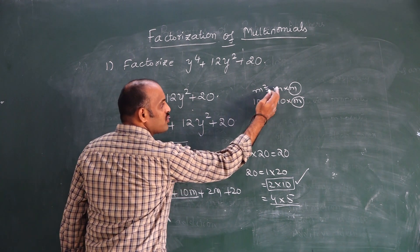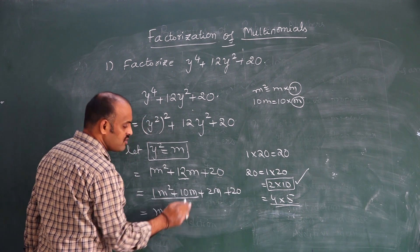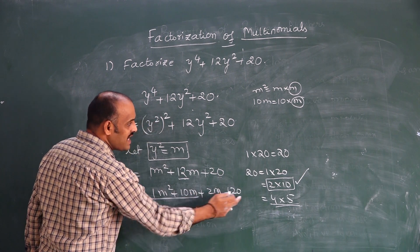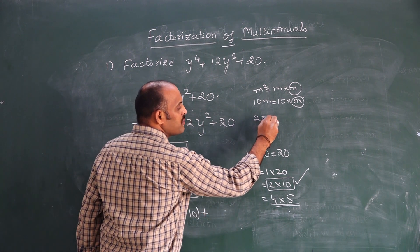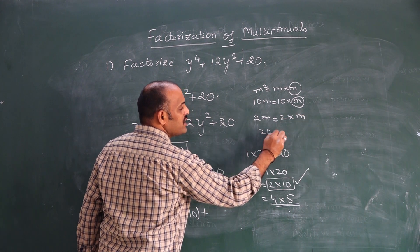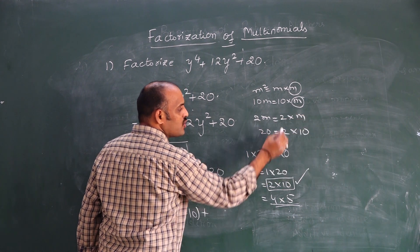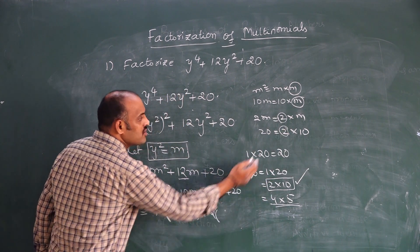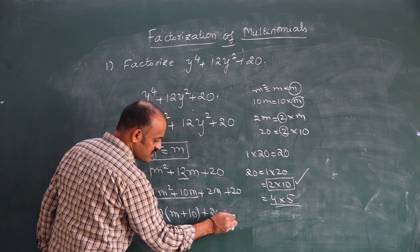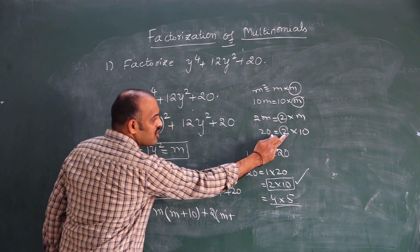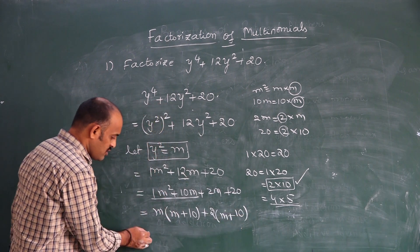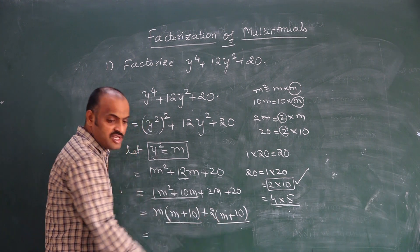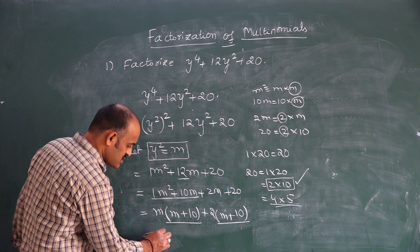From m², if I take m common, m remains. From 10m, taking m common gives 10. In the last two terms, 2 is the most common factor. From 2m, taking 2 common gives m; from 20, taking 2 common gives 10. So we have m(m + 10) + 2(m + 10). In both groups, (m + 10) is common.